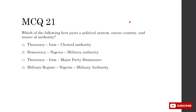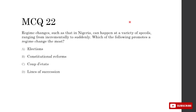Which best pairs a political system, course country, and source of authority together? A — theocracy, Iran, clerical authority: clerical authority means religious authority — that's true and makes A correct. B — democracy, Nigeria, military authority: military authority is authoritarianism, and Nigeria is now democratic. C — theocracy, Iran, major party dominance: Iran is not dominated by a major party. D — military regime, Nigeria, military authority: Nigeria has become democratic in recent decades. So A is correct.